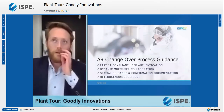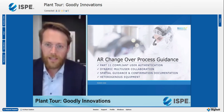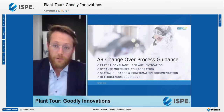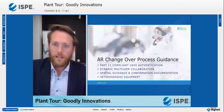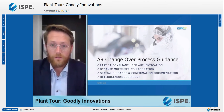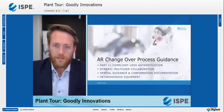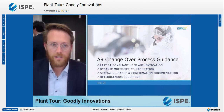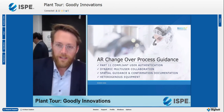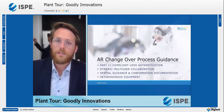To summarize what we've seen: we have Part 11 compliant user authentication, two persons dynamically collaborating — people can jump in and out of the process across multiple shifts or handovers, enabling dynamic workforce distribution. We've seen spatial guidance with confirmation and documentation, and the system works over heterogeneous equipment, which is important for utilizing this technology in a brownfield environment. The audit trail will be shown in the next part of the demo.